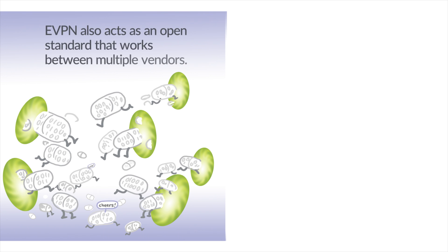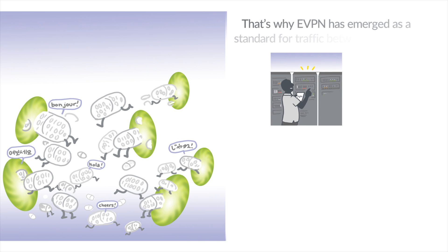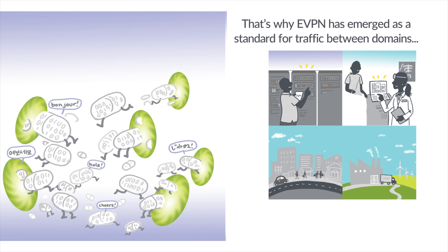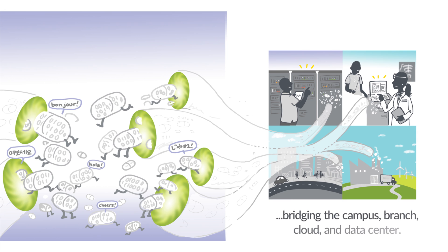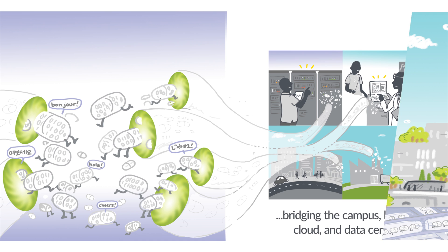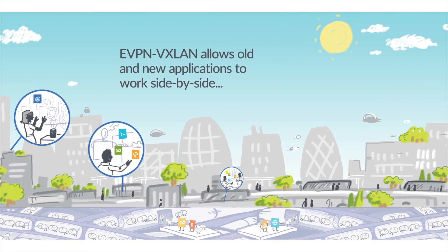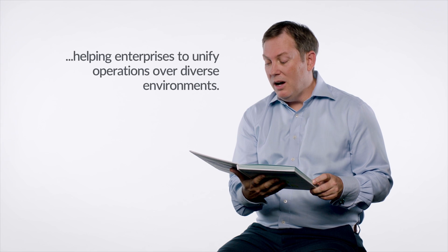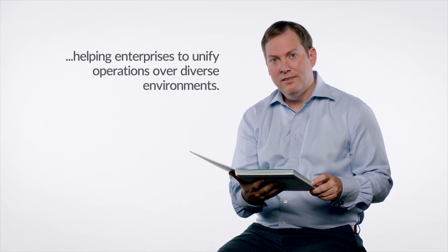EVPN also acts as an open standard that works between multiple vendors. That's why EVPN has emerged as a standard for traffic between domains, bridging the campus, branch, cloud, and data center. EVPN VXLAN allows old and new applications to work side-by-side, helping enterprises to unify operations over diverse environments. And that is EVPN simplified.